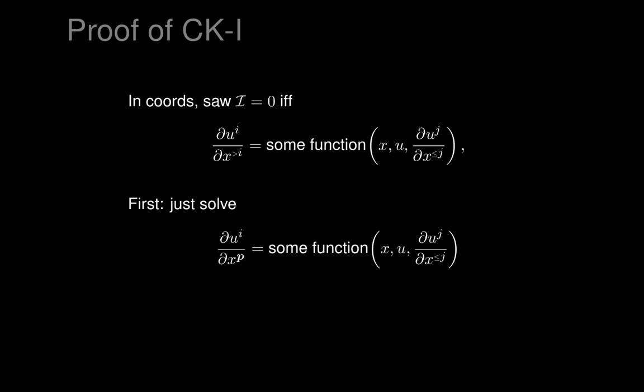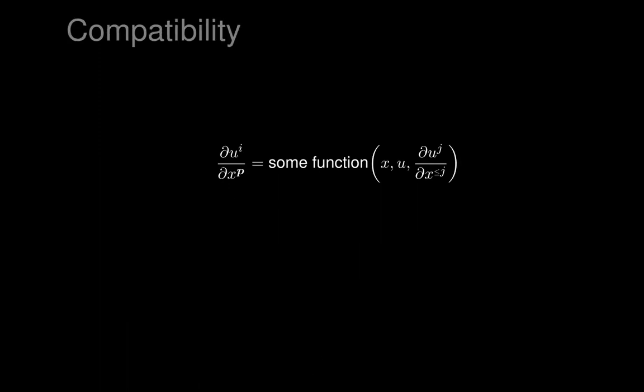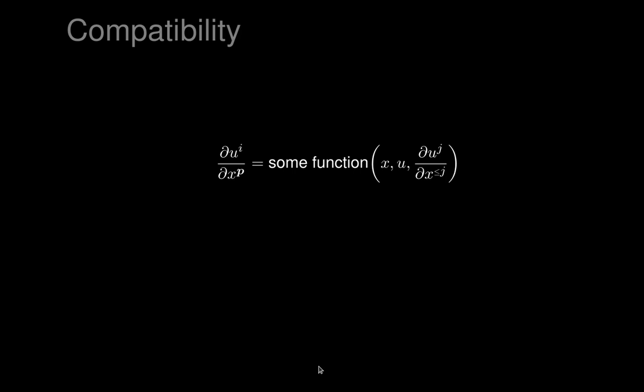Now let's just solve the last equations in the x_p variable and worry only about those equations. We've got to worry about trying to construct the solution of this system, and we know that's going to exist by the Cauchy-Kowalewski theorem. Let's call the solution graph X_p. What we need to show is that X_p is an integral manifold of the whole system — not just of those equations, but of all the other ones. So let's figure out where these equations come from in differential forms: which differential forms have we forced to vanish on this X_p, and which haven't we?